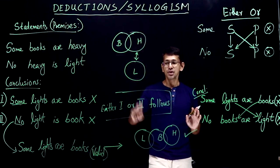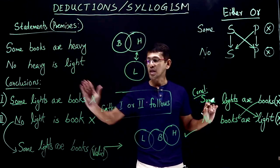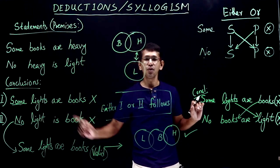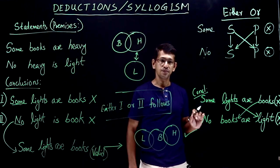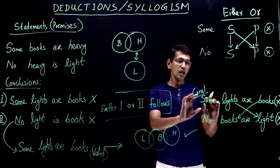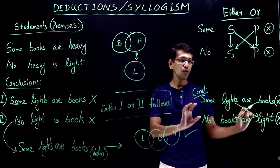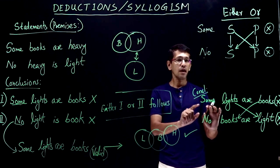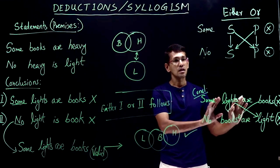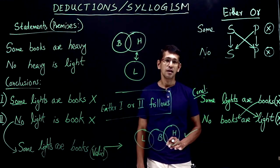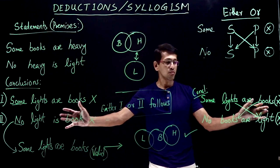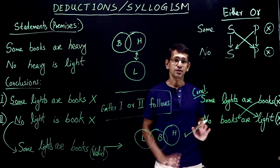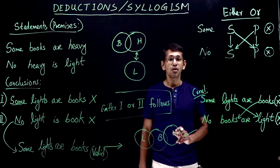Any time you have two conclusions, both do not follow, subject is subject, predicate is predicate, one is some and the other one is no — then the answer would be either one or two. On the other hand, if both do not follow, subject is predicate, predicate is subject, and one is some and the other is no — that is either one or two follows as well. So both sets of conclusions, the answer would be either one or two follows.